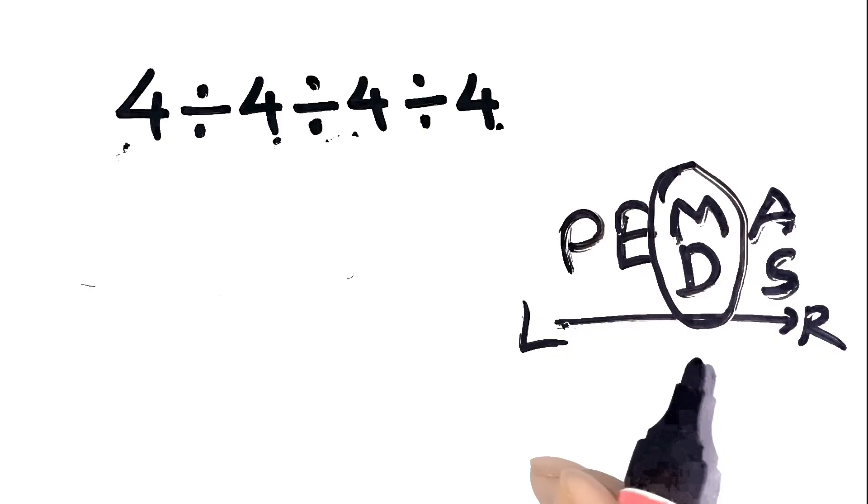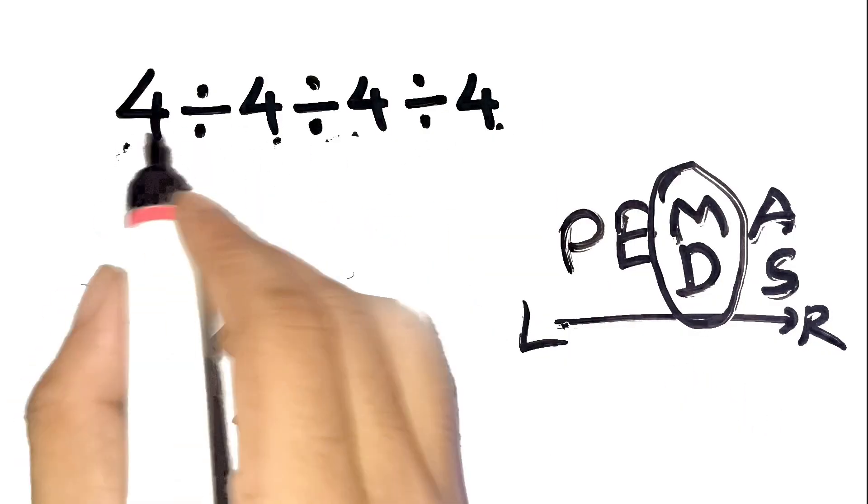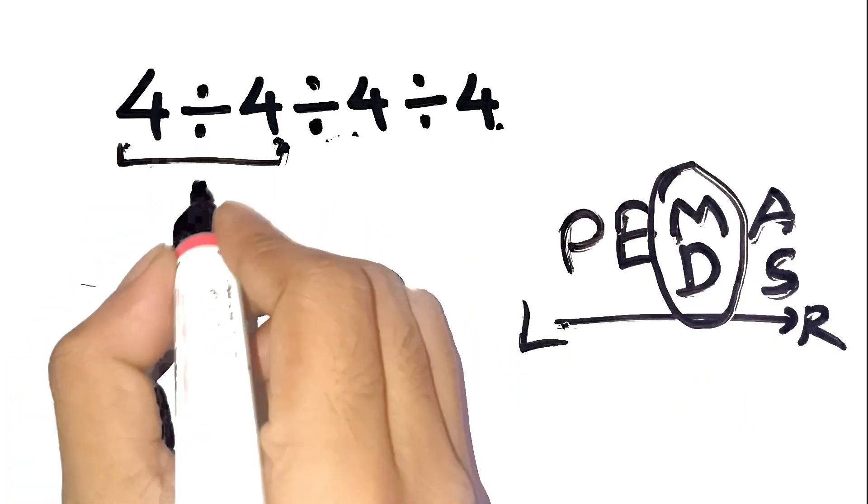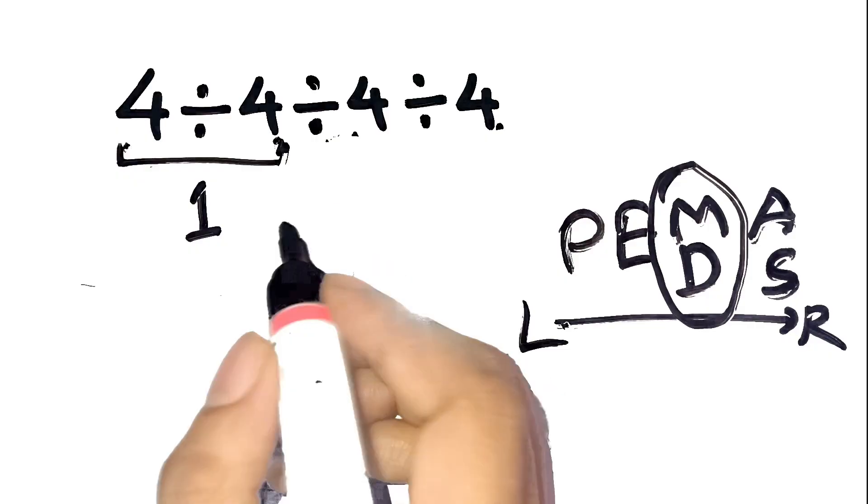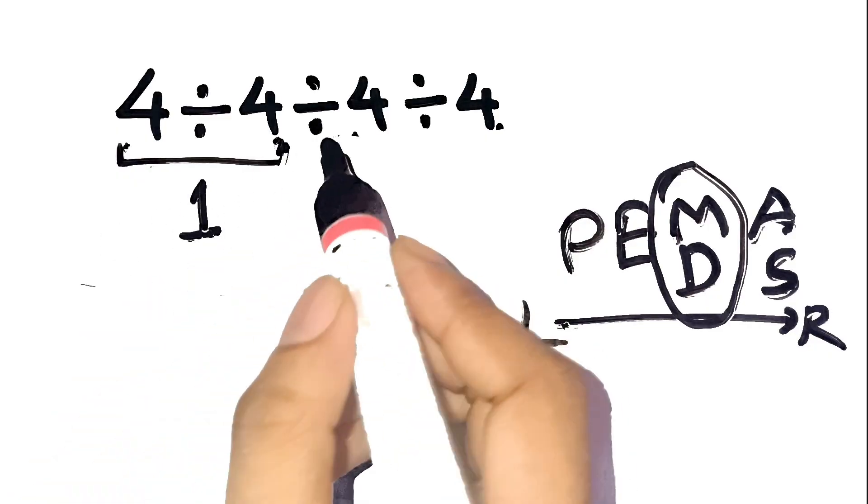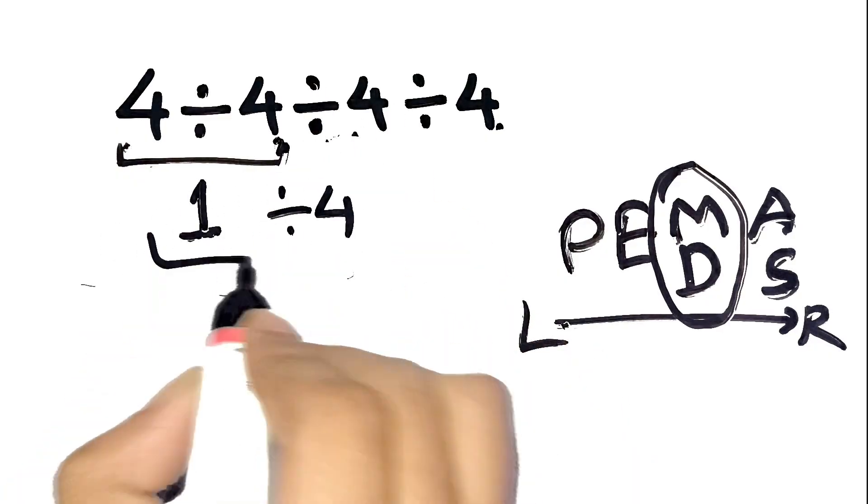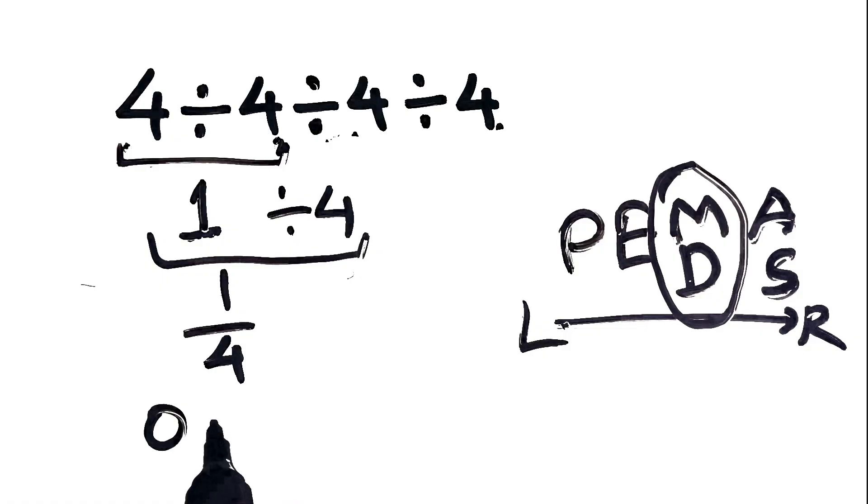So, let's do exactly that. Starting from the left, 4 divided by 4 equals 1. Okay, now we take that result. 1 divided by 4. That's 1 fourth, or 0.25.